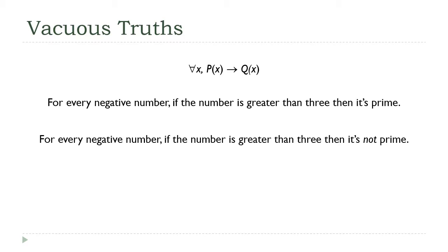Okay, so this kind of statement where P(x) is false for every value of x, the statement is true regardless. I could put anything in the Q(x) position and I would have to conclude that this statement is true. This is what's called a vacuous truth, or a statement that's true by default.